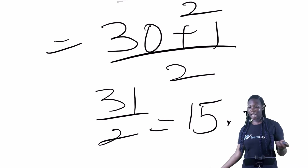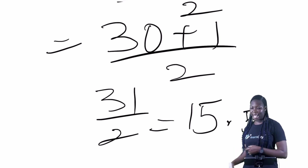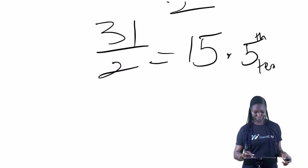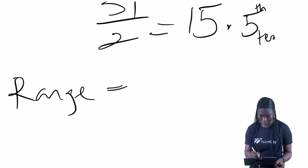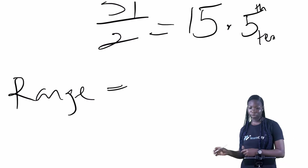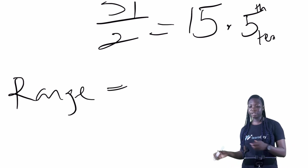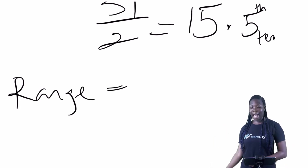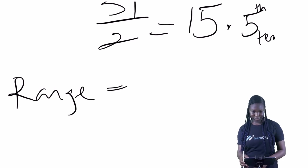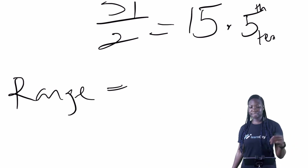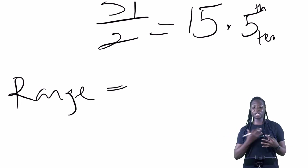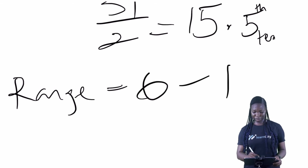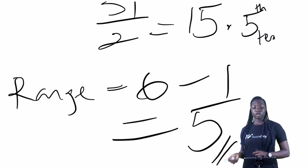Now we have to find our range. For the range, we look at the number of dice values. We have it to be 6 minus 1, and we have it to be 5. So we have our range to be 5.